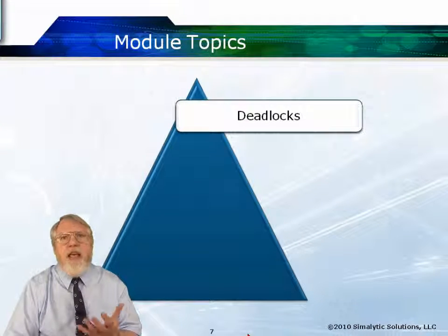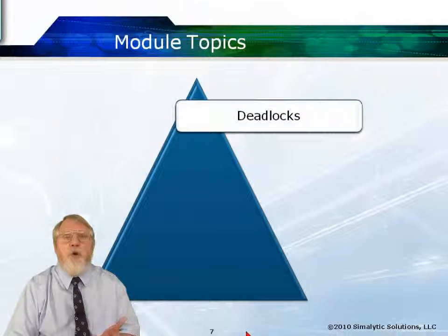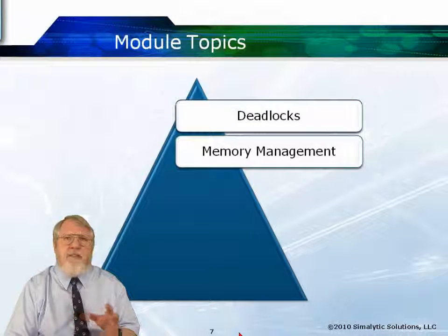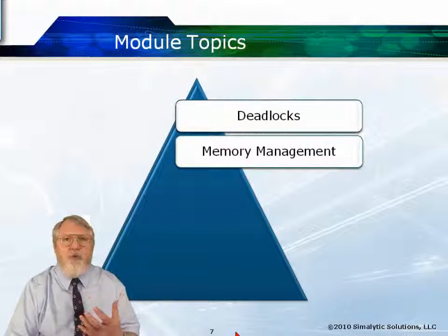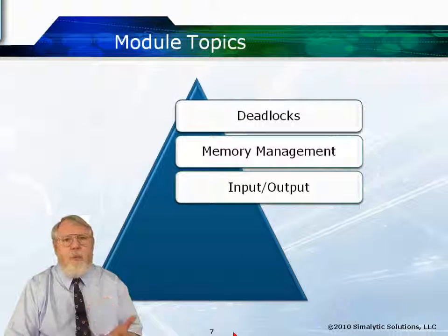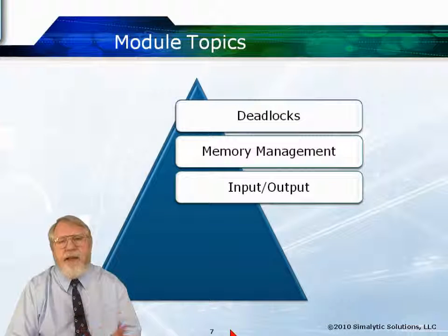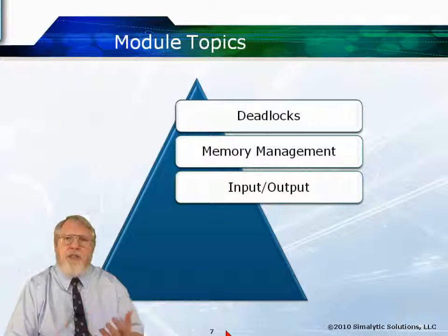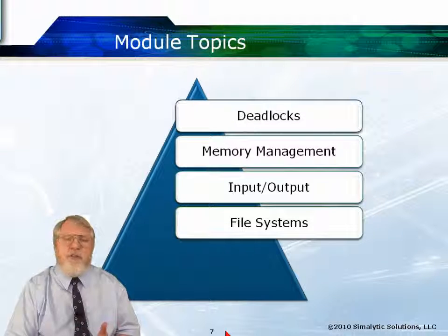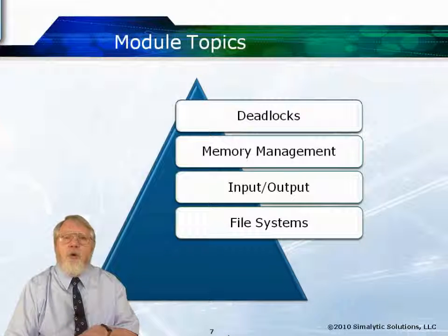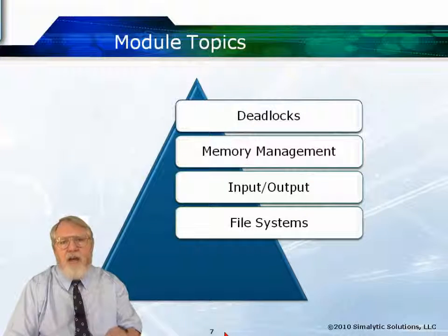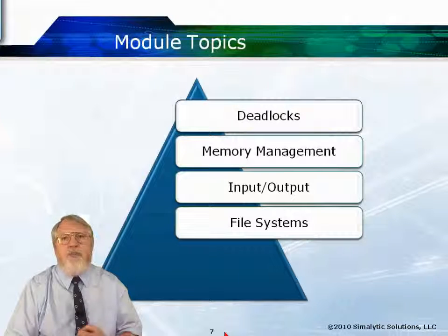We'll talk about deadlocks — the errors or problems that cause machines to seem to quit working but not fail completely. Memory management: how does the operating system manage physical memory so that every application can use what it needs without impacting what other applications also need? Input and output: there's not much use for a computer if you can't get data into it and data out, so the operating system manages input-output on many different levels and we'll talk about how and what techniques are used. File systems: the operating system maintains permanent storage and provides applications a view of how to keep data, use files to exchange data, save data, or read data.